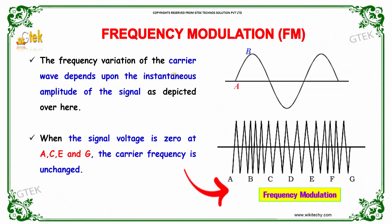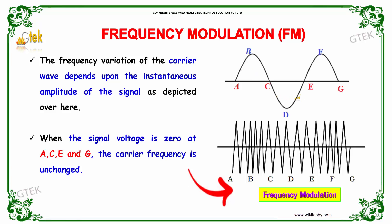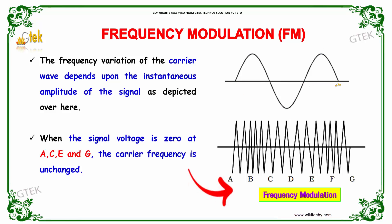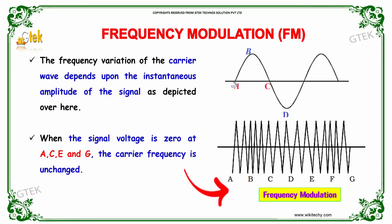The frequency variation of the carrier wave depends upon the instantaneous amplitude of the signal. When the signal voltage is zero, at points A, C, E, and G, the carrier frequency will not get changed.